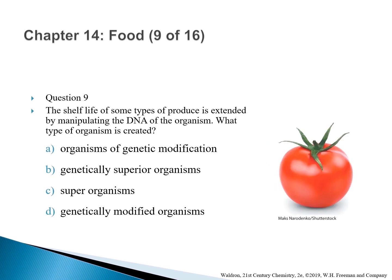Question 9: The shelf life of some types of produce is extended by manipulating the DNA of the organism. What type of organism is created? The correct answer is D — genetically modified organisms. An organism with modified genetic material is a GMO.